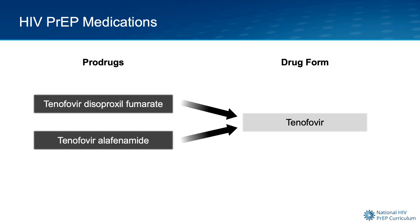The medications tenofovir disoproxil fumarate and tenofovir alafenamide are pro-drugs that are converted in the body to tenofovir. So in the following discussion on the mechanism of action of HIV PrEP medications, the drug form named tenofovir will be used instead of the tenofovir pro-drug names.